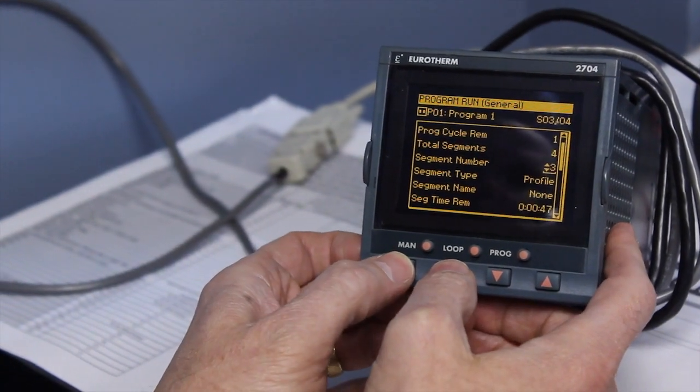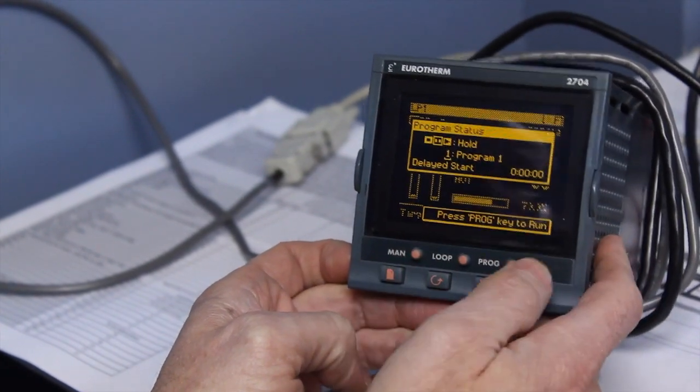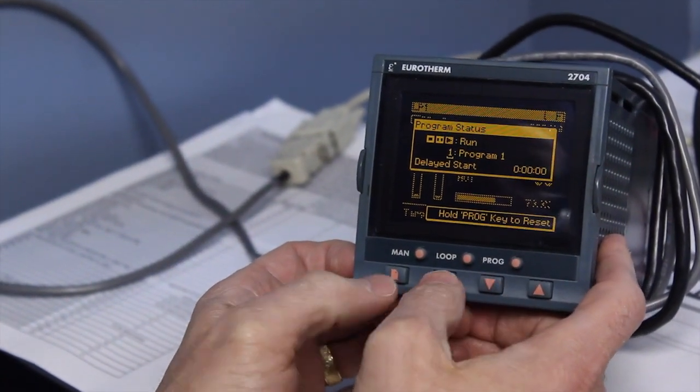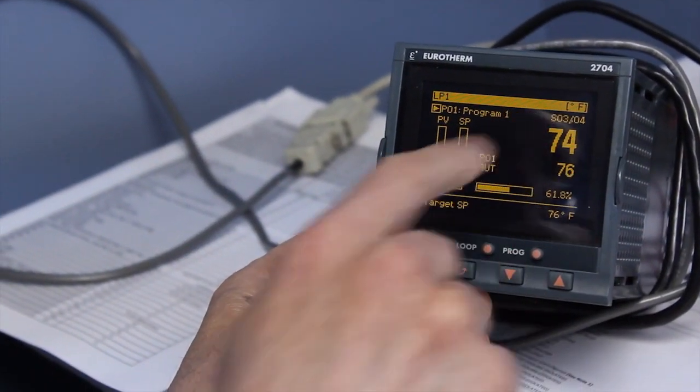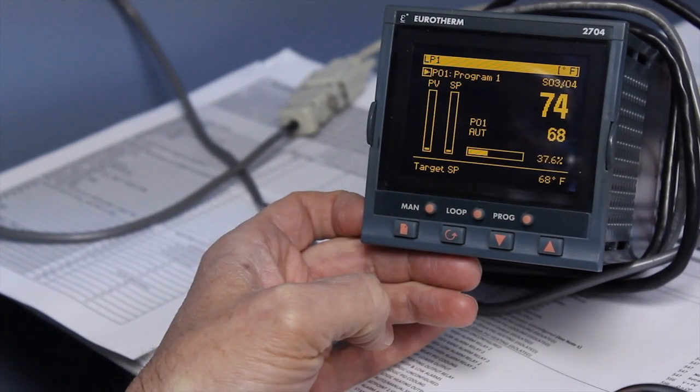We hit the page and scroll key together to get back to the home display. We hit the prog button and notice it's still in hold. We hit it back to run and now we're executing. We've advanced from segment one to segment three in continuing the program.